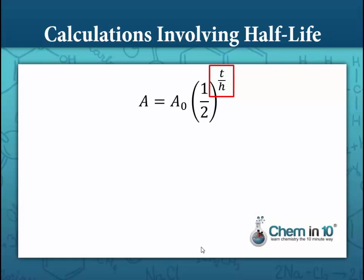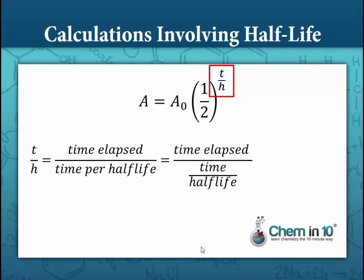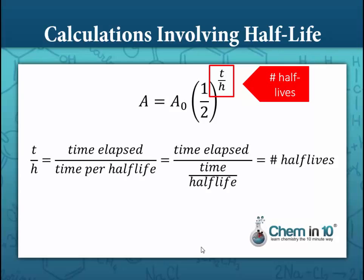Let's elaborate on this exponent: time elapsed divided by half-life. Time elapsed divided by the amount of time per half-life is equal to the number of half-lives. For example, if the half-life of strontium-90 is 28.8 years, then if 28.8 years have passed, that's equal to one half-life, because 28.8 years divided by 28.8 years per half-life equals one. Similarly, if 57.6 years have passed, 57.6 divided by 28.8 years per half-life equals two half-lives. Therefore, our equation tells us that the amount remaining equals the original amount times one-half raised to the number of half-lives.